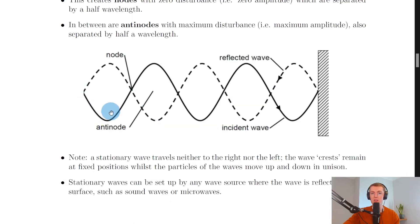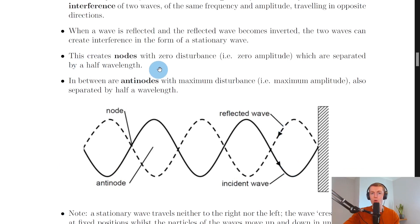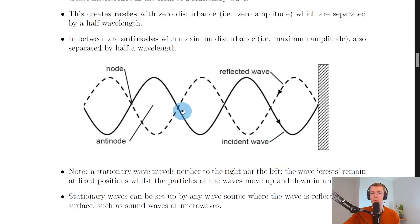If you look at this picture, the solid black line represents the incident wave going towards the fixed boundary, and the dashed line reflects off the wall and is inverted — that's your reflected wave. This creates regions called nodes and antinodes. Nodes have zero disturbance, i.e. zero amplitude, and are separated by half a wavelength. Antinodes are points of maximum disturbance or maximum amplitude, also separated by half a wavelength.